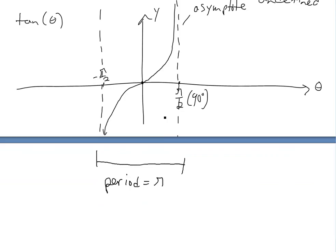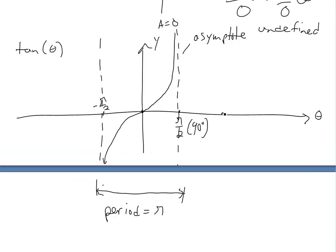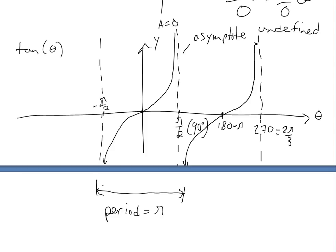Whereas sine and cosine have period 2 pi, tan's period is just pi, because it's pi over 2 plus pi over 2 — that's the length before it repeats. So at 180 degrees it's zero again, and at 270 degrees there's another asymptote, so it goes like this. This is 270 or 3 pi over 2. And it keeps going to infinity there, and this keeps going on — negative 270, negative 180, going down like that.